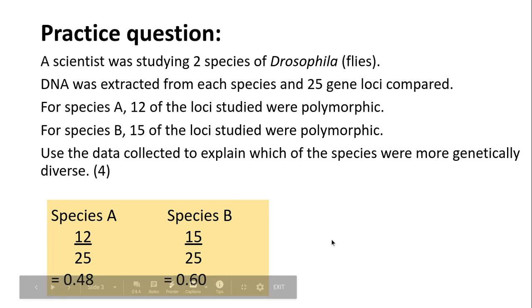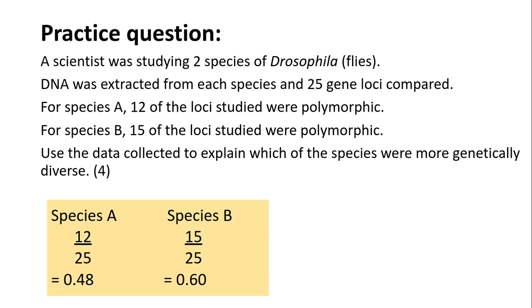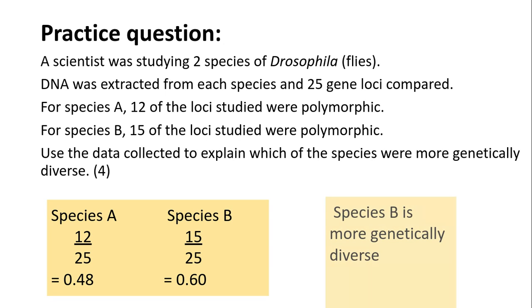That gives us species A = 0.48 and species B = 0.6. Therefore species B is more genetically diverse. This is a quite simple way to look at it and quite straightforward.